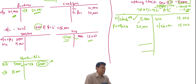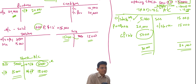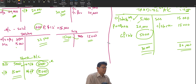Balancing the trading account: the total is $30,000 on both sides; the gross profit is $5,000. The remaining balance in the Stock Account is $15,000, which will be reflected in the closing balance sheet for February. Debtors balance will be $22,500 and Creditors balance $30,000, all reflected in the balance sheet.